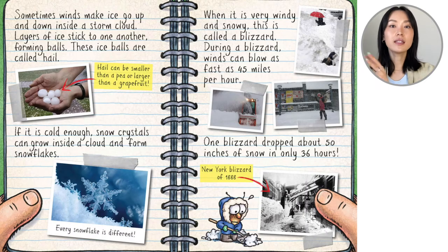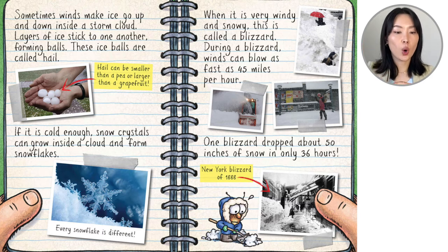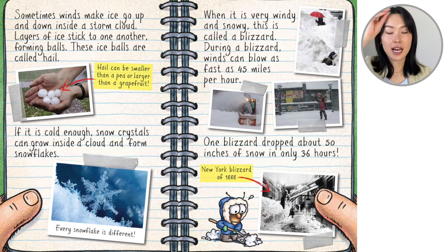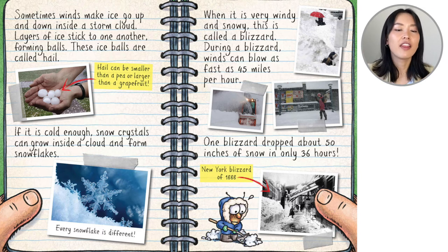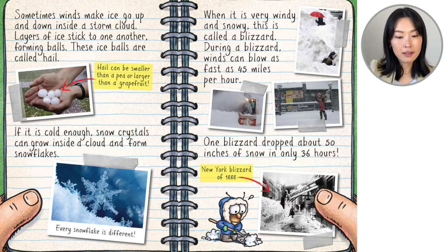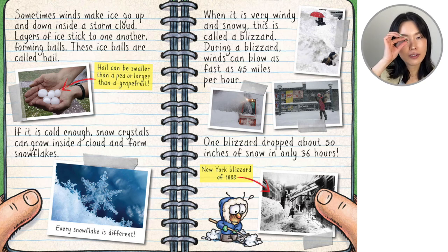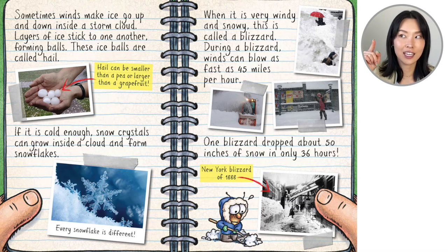Sometimes winds make ice go up and down inside a storm cloud. Layers of ice stick together, forming balls. These ice balls become hail. Hail can be smaller than a pea or larger than a grapefruit. You don't want that hail to hit you, or your car, or your house.